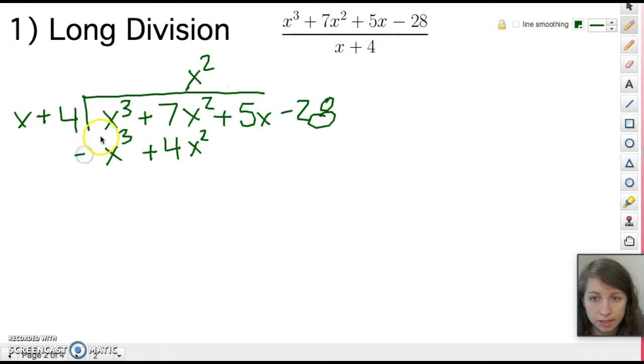The third step is to subtract. Whenever I subtract I like to put a parentheses around this whole thing just to remind myself that I'm subtracting all of it. So x³ minus x³ cancels itself out. 7x² and then this is minus 4x², we have 3x², and then we will bring down the next term so plus 5x and then we just repeat those four steps.